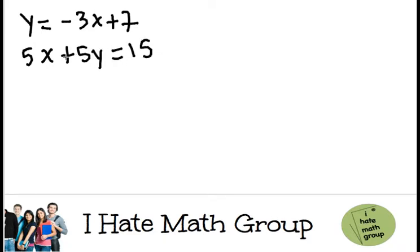I need to solve the system of equations. I'm going to do it by using the substitution method. You can see here that y equals negative 3x plus 7. Well, I'm going to plug this y right here. Basically, I'm going to substitute. Instead of writing 5y, I'm going to do this.